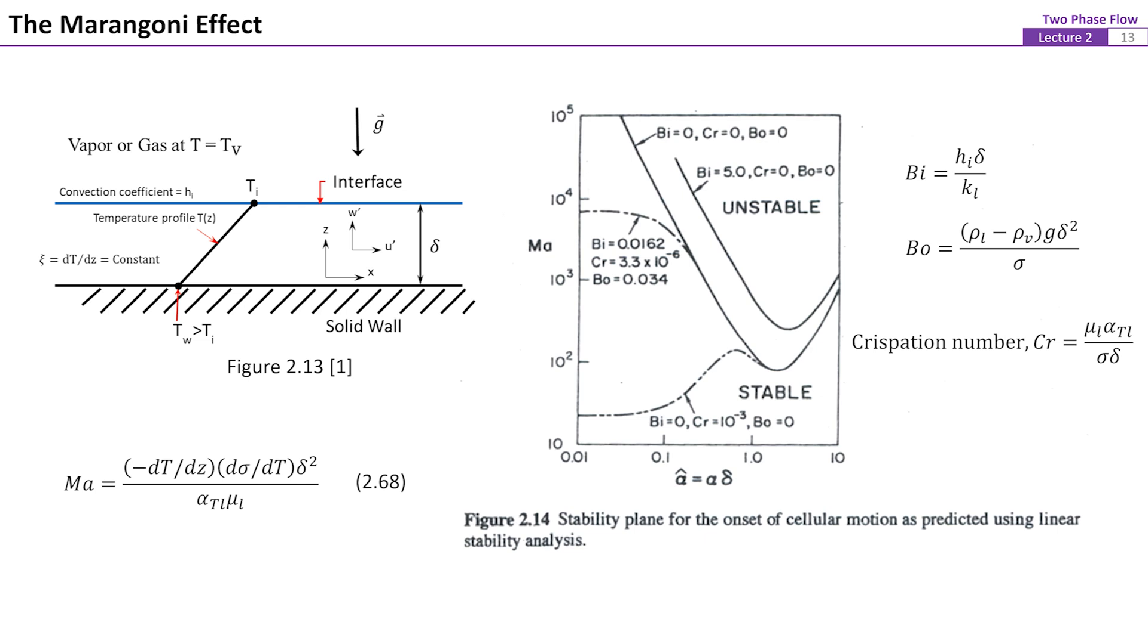Lastly, in general, it is expected that the system will become unstable if any of the disturbances wavelengths is unstable. So, based on this figure, for small crispation numbers, the threshold value on the Marangoni number, in this case, is estimated to be about 80.